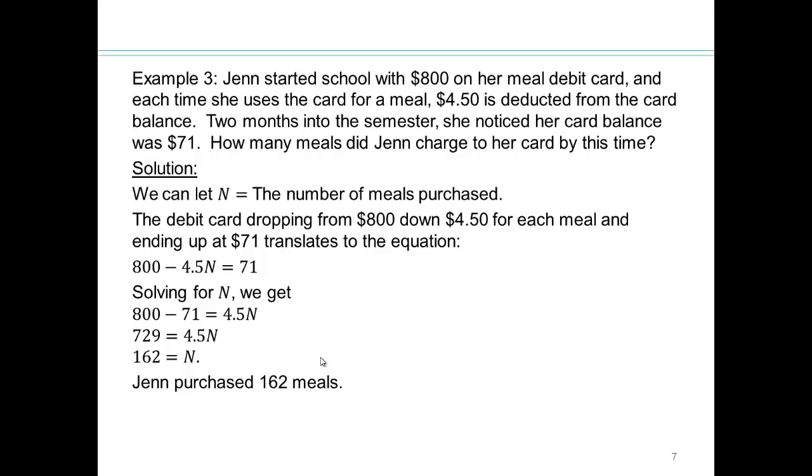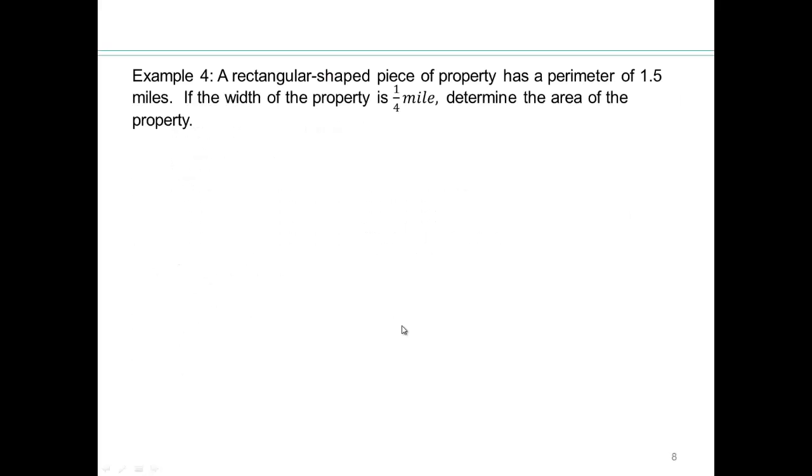And so that means Jen purchased 162 meals. Now, how do you know if it's reasonable or not? Two months, so that's like 60 days. Let's say you eat two meals a day or three meals a day, depending on how many meals a day you eat. So 60 times 3 is about 180, and 60 times 2 is about 120. So that's a reasonable amount of meals in the two months, even though it looks like a really big number.